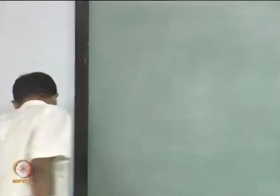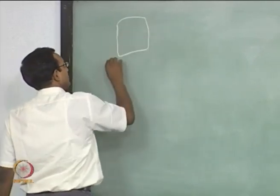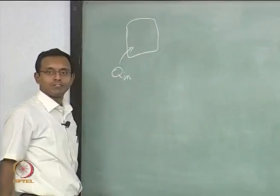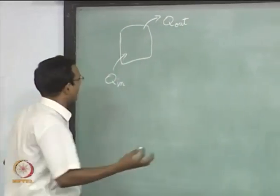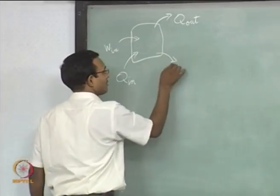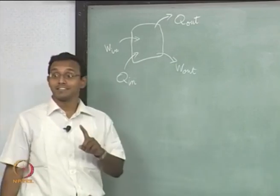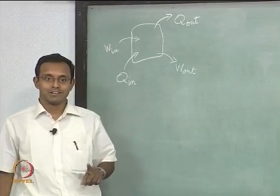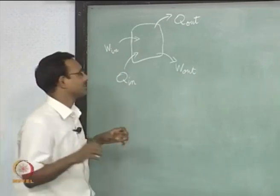Now we have to put mathematical expressions for the laws. For the first law, consider a system — some box — with some amount of heat going in, some heat going out, some work in, and some work out. The only possible interactions for our system are heat transfer and PDV work, since we assume a simple compressible substance where we can only heat or cool the gas or do PDV work on it.